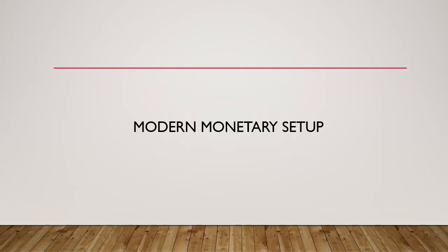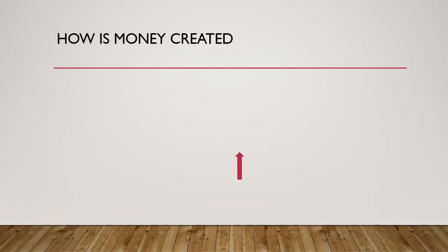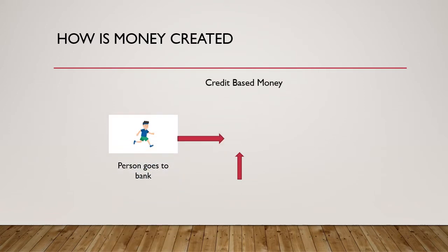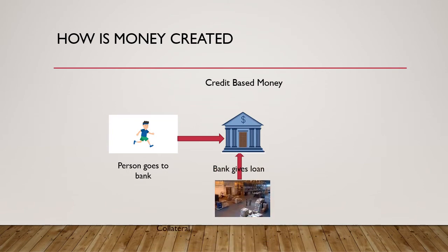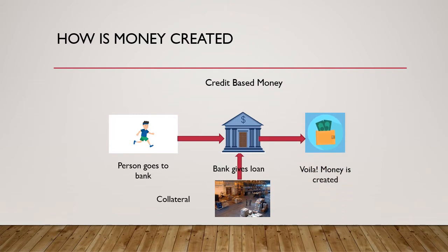Before we start, we will have a brief context of the modern monetary setup where we will discuss how money is created and grows in the economy. Under this system, a person goes to the bank to get some loan. The bank takes from the person a collateral, which can be an asset or an inventory, and in lieu of that, the bank grants him a loan — and voila, money is created in the economy, because in this system, credit is money.